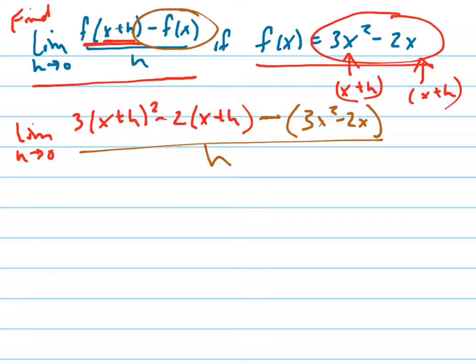So what's the limit of this? Well, now let's just simplify it all. To simplify all that, I'm going to first distribute that 3. So the limit as h goes to zero of 3 times—that's going to FOIL out to x² + 2xh + h².